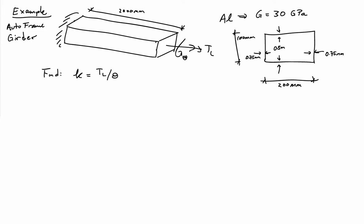Let's consider an aluminum automobile frame girder. It's 2 meters in length, and it's got cross-sectional dimensions of 100 millimeters by 200 millimeters.